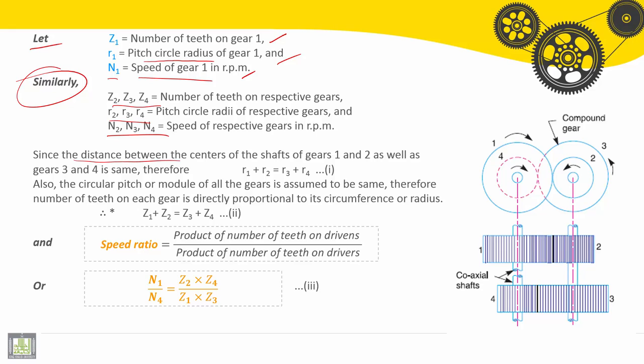Since the distance between the centers of the shafts of gear one and two as well as gear three and four is the same, therefore R₁ + R₂ should be equal to R₃ + R₄. Here we have R₁ + R₂ is equal to R₄ + R₃, which is the same as R₁ + R₂ equals R₃ + R₄.